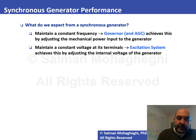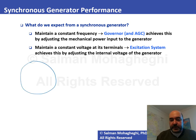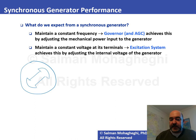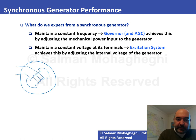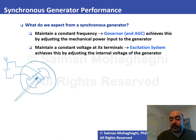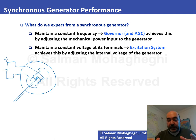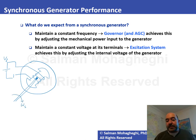A synchronous generator is a rotating electric machine. It consists of a stator, which is the stationary part, and a rotor, which is the rotating part. The rotor is a salient pole with a winding wrapped around it, connected to an external voltage source V_f. The rotor is mounted on a shaft connected to the prime mover — a steam or hydro turbine — and rotates at speed ω_s, which determines the output frequency.